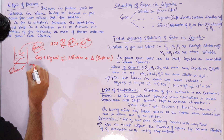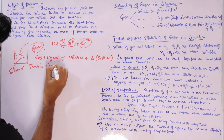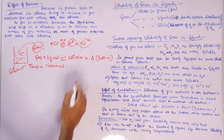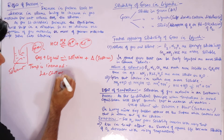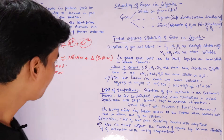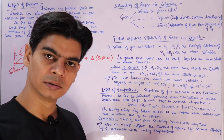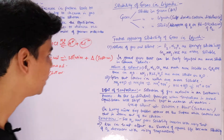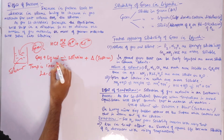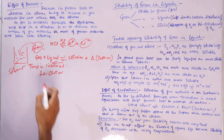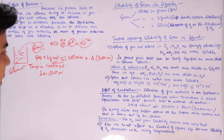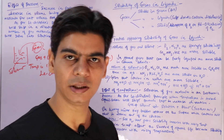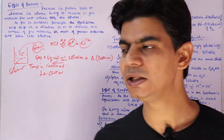Since dissolution of gas in liquid is an exothermic reaction, when temperature is increased, as per Le Chatelier's principle, the equilibrium will shift in the direction where heat is absorbed — that is, the reverse direction — where gas is leaving the solution. So we say that increasing temperature decreases the solubility of gases in liquid, as proved by Le Chatelier's principle.